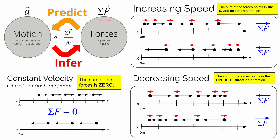Our bungee jumper was decreasing speed. So what do we know about things that decrease in speed? We know that the sum of the forces points in the opposite direction of motion. So if the bungee jumper was moving down, the sum of the forces must be pointed up.